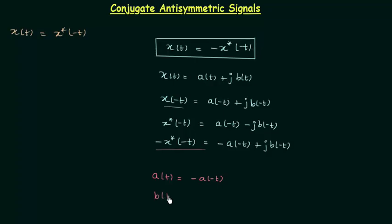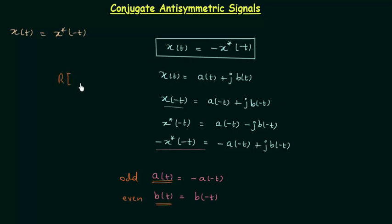In the same way, the imaginary part gives us b(t) = b(−t). Using the properties of even and odd signals, a(t) is odd whereas b(t) is even. So the real part of signal x(t) is odd, whereas the imaginary part of signal x(t) is even.